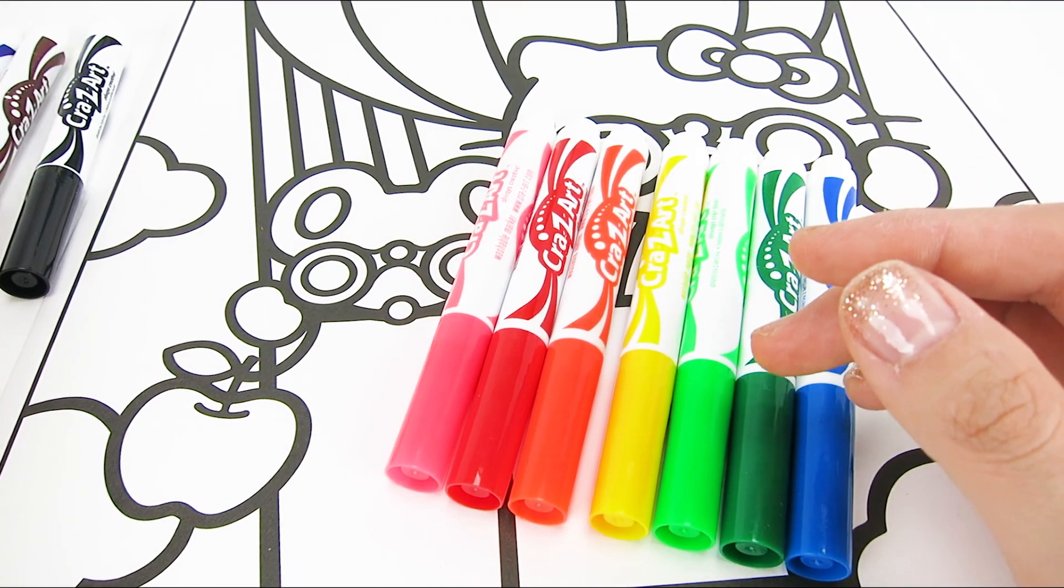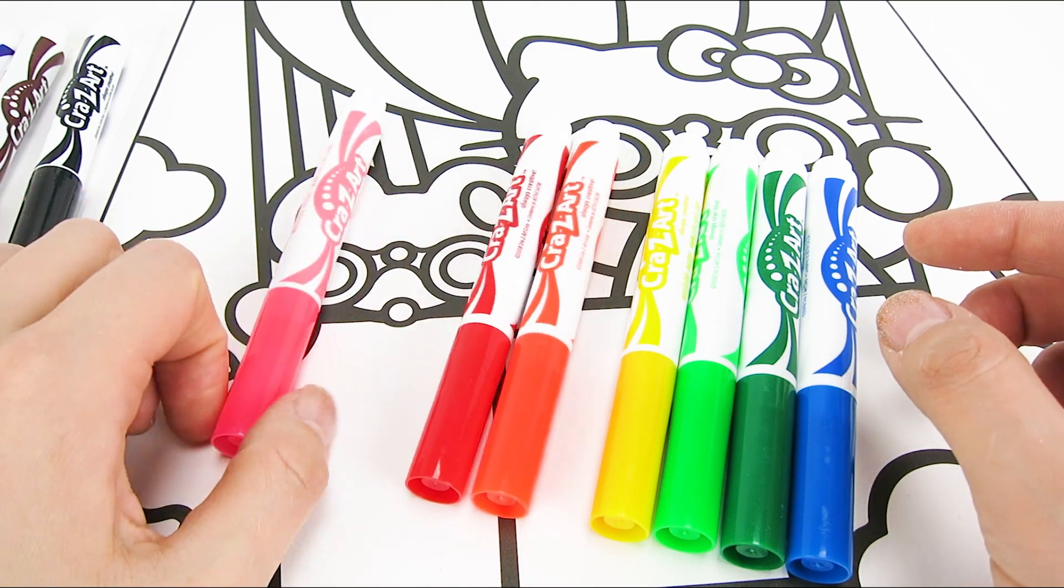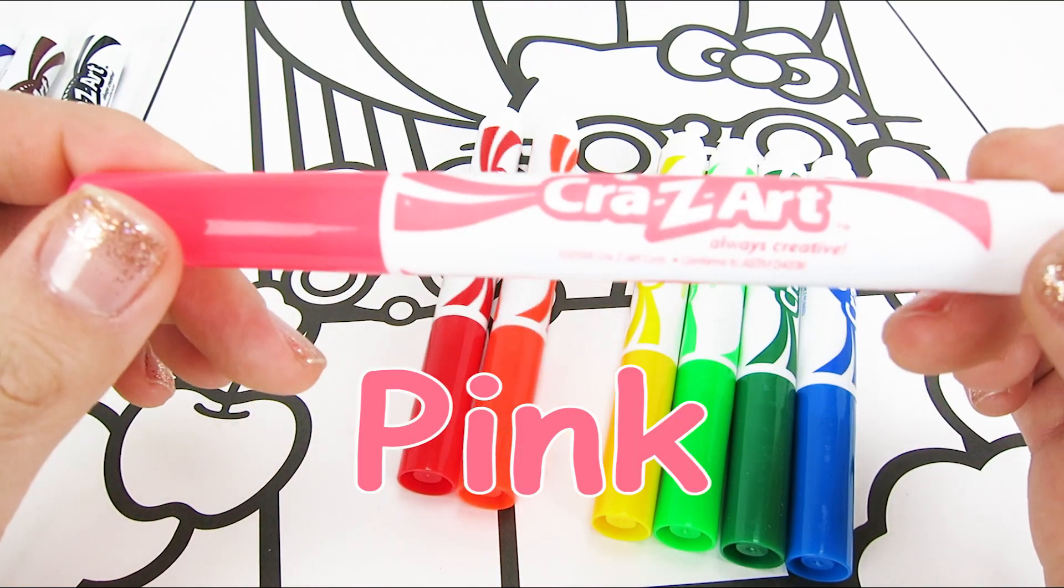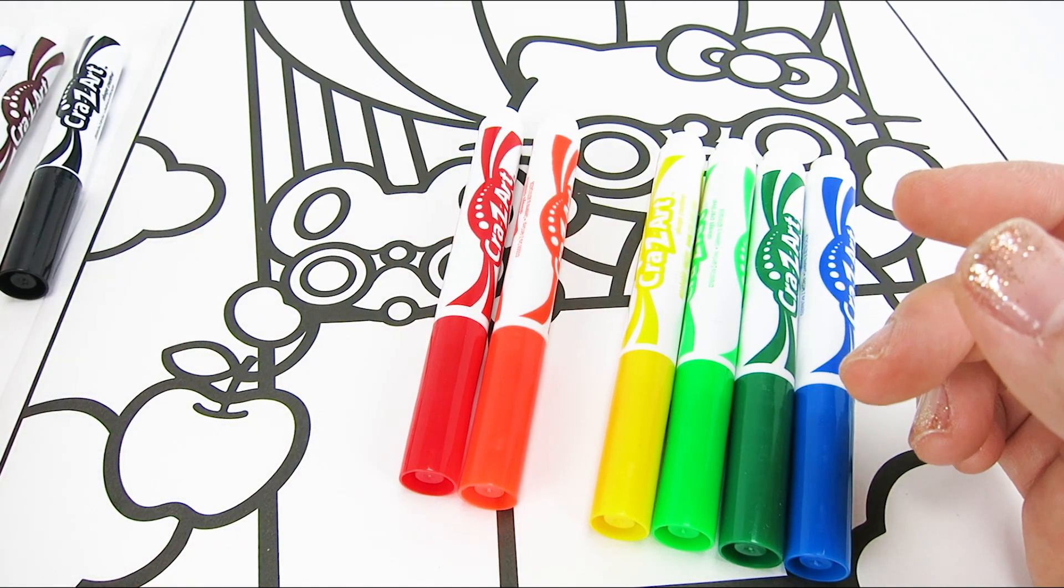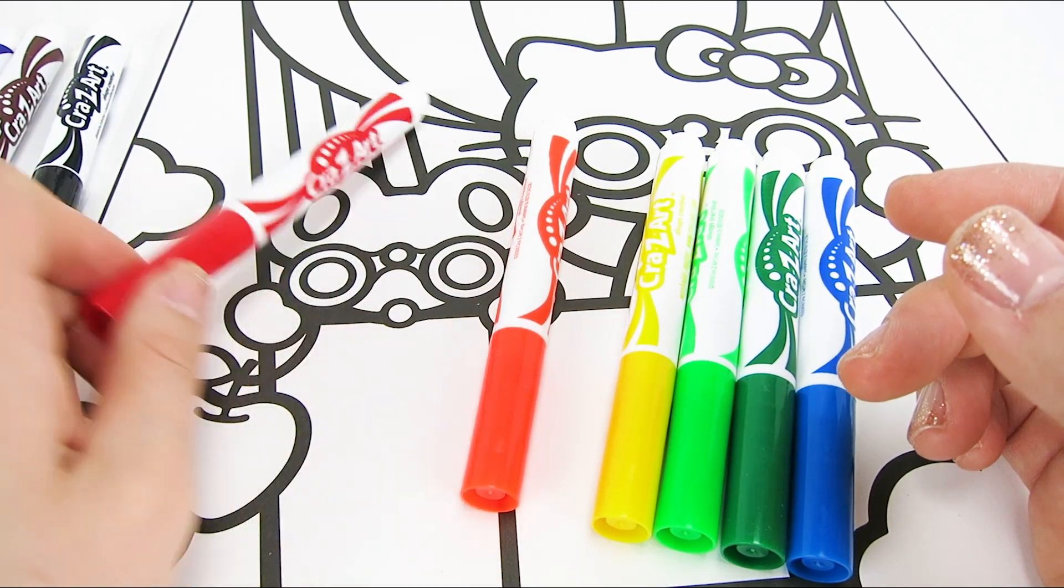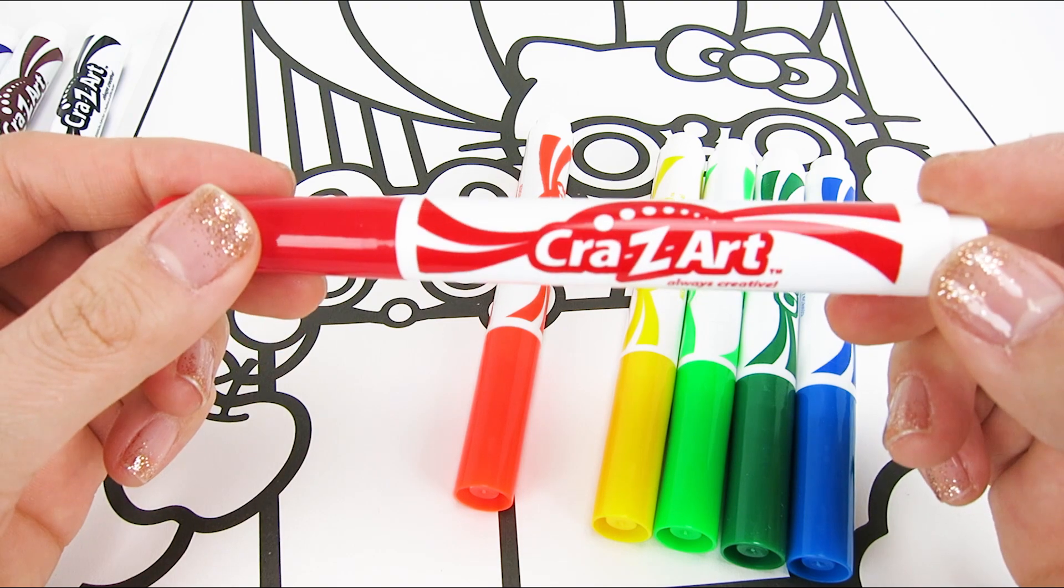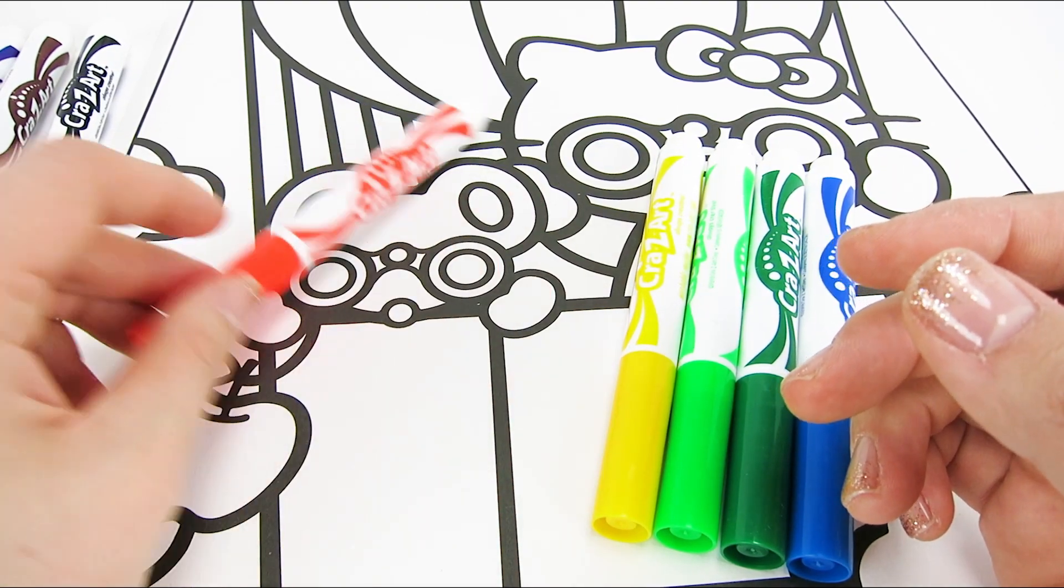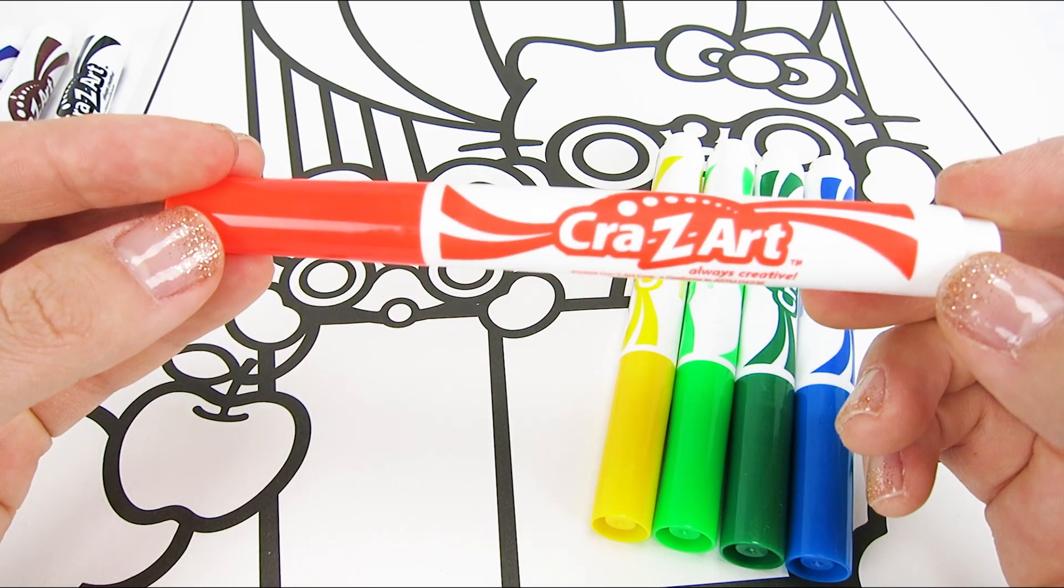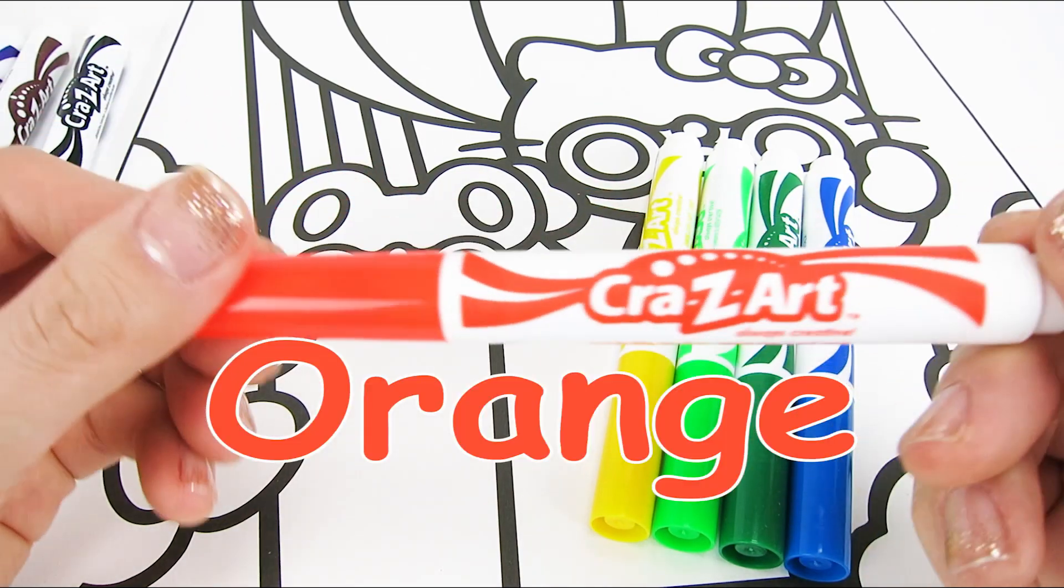This next one is one of my favorites. Can you guess what it is? It's pink. But more like a bubblegum pink. This next color is really pretty. It's red. You must know this one. It's the name of a fruit. It's orange.